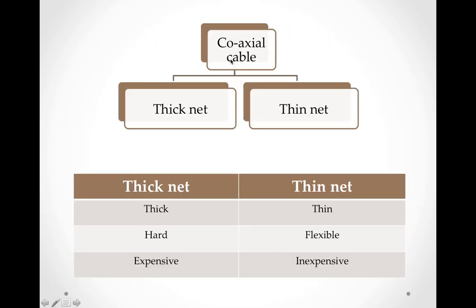Coaxial cable has two types: thick net and thin net. Thick net means it is thick, hard, and expensive. For thin net cable, the wire is thin, flexible, and its cost is less if we compare it with thick net.